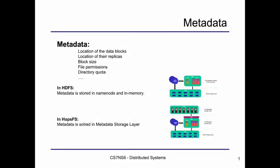To ensure a common interpretation of metadata, let's clarify what metadata really is. Metadata is the data about the data. In this context, it includes references to the location of data blocks, since each file is divided into blocks stored somewhere in the storage layer. We also hold a reference to the location of replicas. Block size, file permissions, directory quotas, and other related information about the actual data are all called metadata.